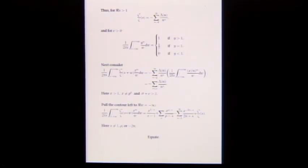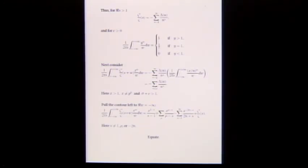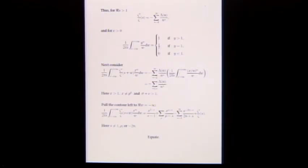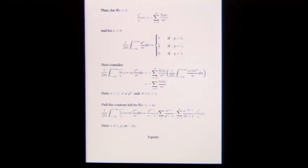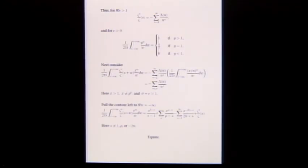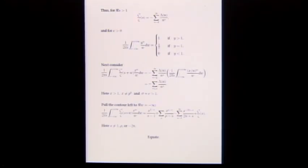On one hand, we have this expressed as a truncation of the Dirichlet series for zeta prime over zeta. Now we evaluate the integral another way by pulling the contour left. Doing this rigorously requires chopping off the integral and estimating around the sides. Pulling left gives the sum of residues inside. Zeta has a pole at 1, so zeta of (s+w) has a pole at 1 minus s, with residue negative 1, giving x to the (1 minus s) over (1 minus s) times negative 1.